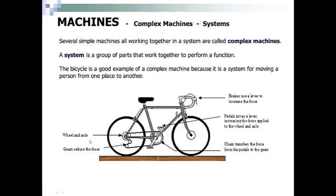In a bicycle you have a wheel and axle. You have gears to reduce the force. You have chains to transfer the force from the pedals to the gears.